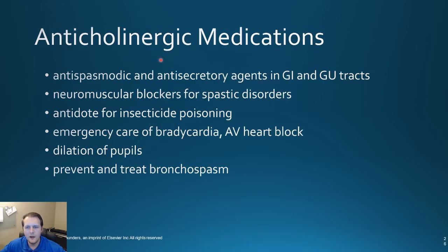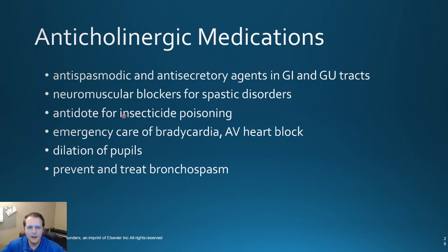Anticholinergic medications are basically going to be things that block the muscarinic receptors and prevent acetylcholine from activating them. We see these a lot as being used for antispasmodic and anti-secretory actions. When we talked about antispasmodics before, we were talking about skeletal muscle; here we're talking about smooth muscle in the GI tract specifically — preventing the smooth muscle in the GI tract from spasming. This can include things like neuromuscular blockers that can cause paralysis for spastic disorders, antidotes for insecticide poisoning, and things like atropine for bradycardia and AV heart block — it can speed up the heart rate. It can also cause mydriasis or dilation of pupils and may be useful for helping patients with asthma who are having bronchospasm.